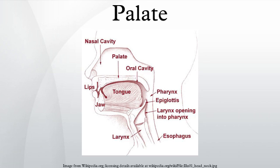The palate is the roof of the mouth in humans and other mammals. It separates the oral cavity from the nasal cavity. A similar structure is found in crocodilians, but in most other tetrapods, the oral and nasal cavities are not truly separate.